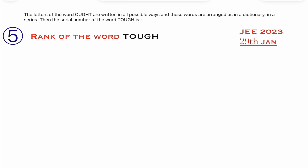We are doing the problems of permutations and combinations chapter, model-wise previous year JEE questions. This is question number five. If you want earlier questions, please check the playlist in the channel. This question was given in JEE 2023 January session.